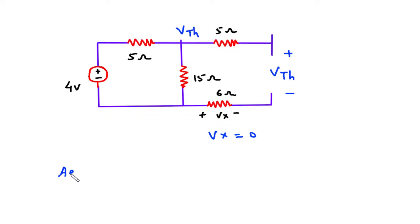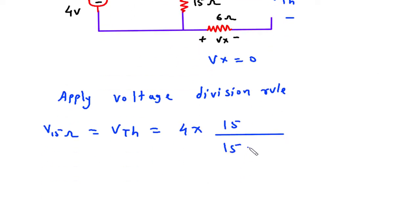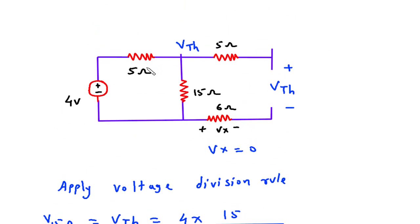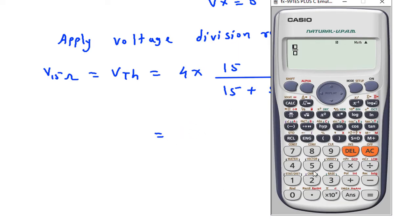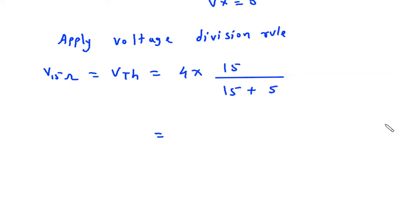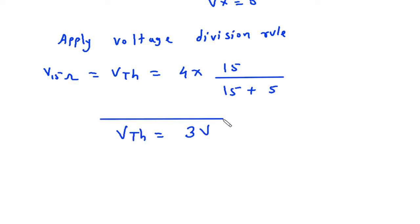We can apply the voltage division rule to find the voltage across this 15 ohm resistor. So V_15ohm equals Vth equals 4 into 15 divided by 15 plus 5, which gives 3 volts. Therefore Vth is equal to 3 volts.